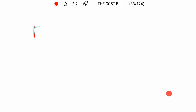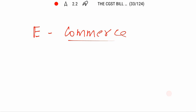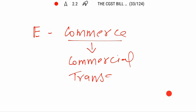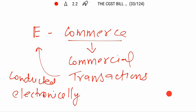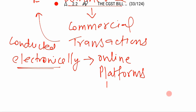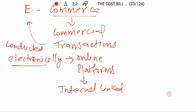Friends, basically Section 9, Subsection 5 — we will first understand some e-commerce basics. If e-commerce is a simple word, e-commerce means commercial activities, commercial activities of transactions, conducted electronically. That means we have transactions which are electronically conducted. Electronically generally means online platforms which are linked to the internet. So electronic commerce means commercial transactions conducted electronically.